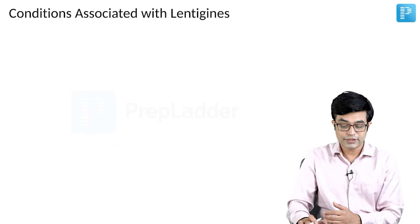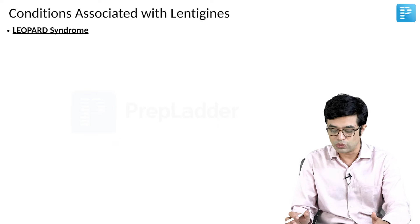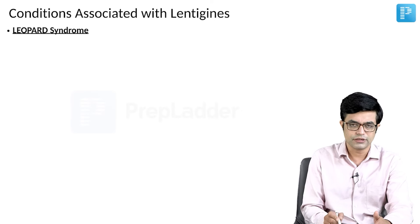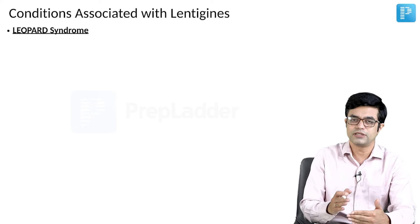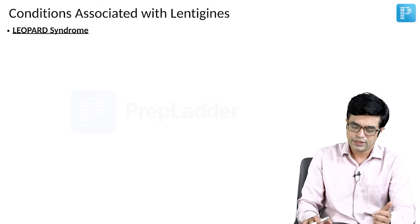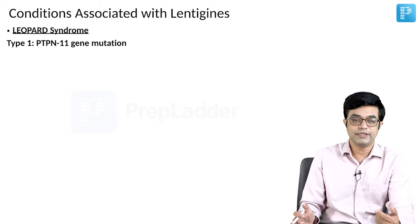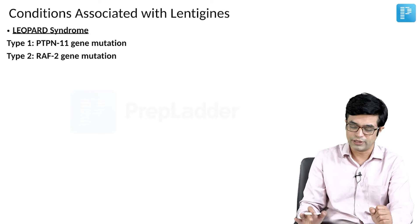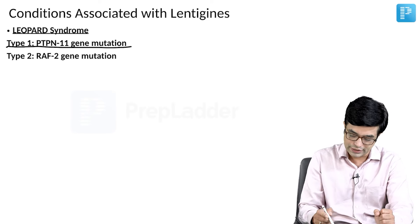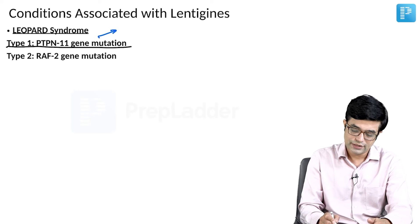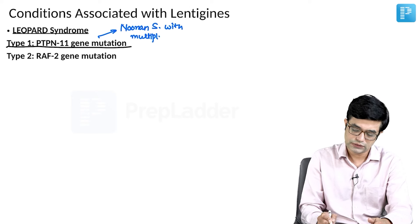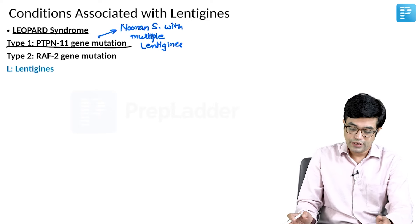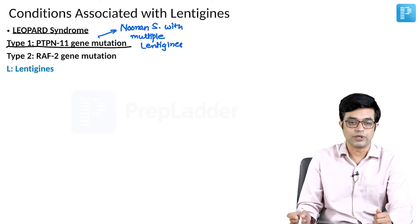Another common condition associated with lentigines is the so-called LEOPARD syndrome. That term has now been discarded; we prefer the term Noonan syndrome with multiple lentigines, because it is strongly associated with Noonan syndrome. Type 1 is the common variety with PTPN11 gene mutation — the same gene mutated in Noonan syndrome. Type 2 is due to RAF2 gene mutation. The common variety is also known as Noonan syndrome with multiple lentigines.